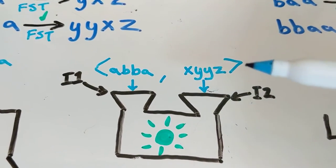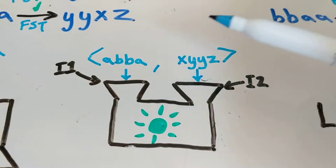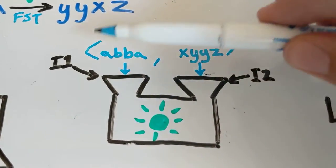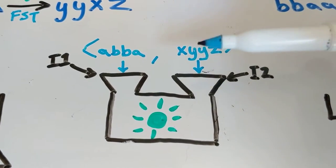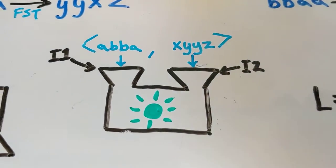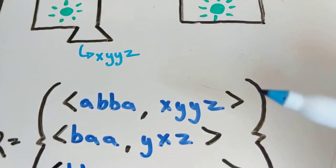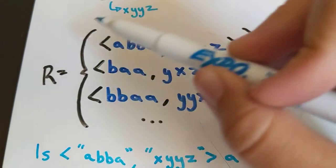This implies that what we're recognizing is whether something is a member of a set of ordered pairs. Now what is that? That's a relation. So this is what our finite state transducer is recognizing.